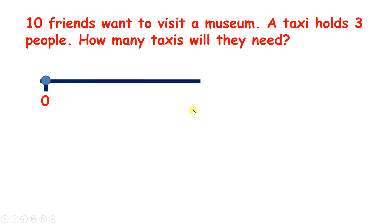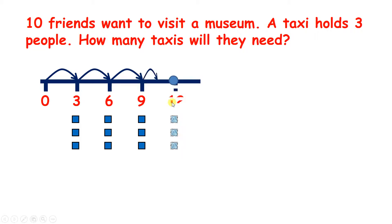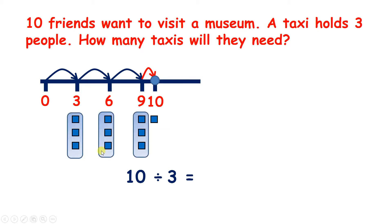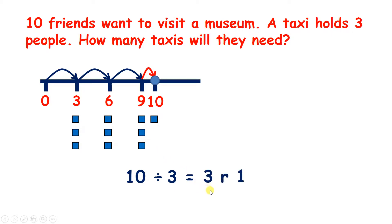So if we count up in threes, we get three, six, nine. Twelve is next, but twelve is too many, so let's go back to nine. And if we're on nine, we need one more to get to ten — so that's our one remainder. So with ten divided by three, we can make three groups of three, and we have one remainder. So we have three remainder one.